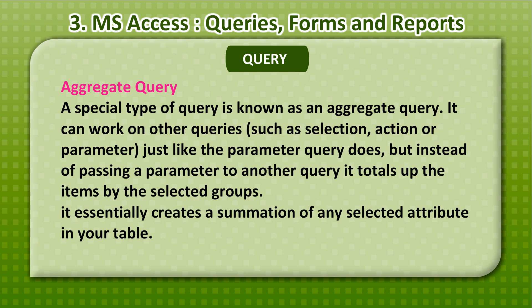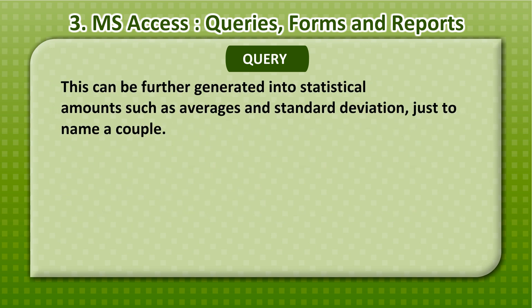A special type of query is known as an Aggregate Query. It can work on other queries such as Selection, Action or Parameter, just like the Parameter Query does. But instead of passing a parameter to another query, it totals up the items by the selected groups. It essentially creates a summation of any selected attribute in your table. This can be further generated into statistical amounts such as averages and standard deviation.